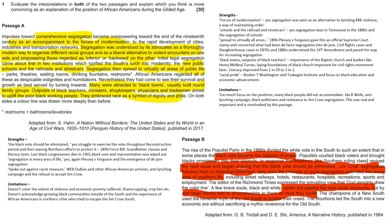Segregation in every area of life — again, we can go to Plessy v. Ferguson and de jure segregation. On those who spoke out against racist measures, we talk about Du Bois, another African-American activist, and the anti-lynching campaign and refusal to accept Jim Crow. However, Passage B doesn't cover the extent of violence and economic poverty suffered — sharecropping and the crop lien system — nor does it acknowledge growing black communities outside of the South.